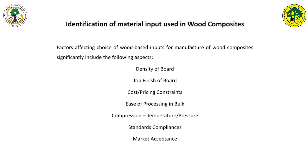Identification of material inputs involves significant factors affecting wood selection, such as density of wood, type of finish required in the board, and pricing constraints — which also involve the compressibility factors of various inputs such as chips and particles. Then there are standards compliance considerations, and finally market acceptance. We may have many different materials to make composites, but the market has to accept them because there are also psychological factors in the consumer's final purchase decision.